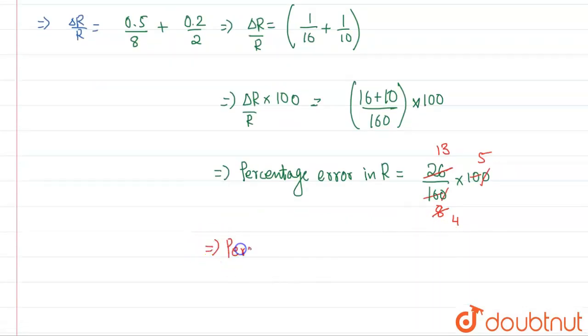So we are left with percentage error in R will be equal to 65 divided by 4. So when you calculate it, 4 times 1 is 4, and this 25 will be left. So 4 times basically 6 is 24.